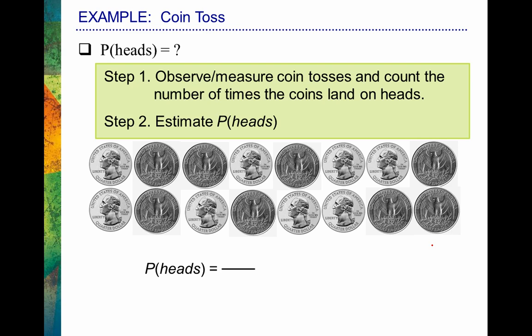Now we've got some data to look at — that's what the relative frequency perspective of probability relies on. To compute the probability of flipping a coin and having it turn out heads, we look at the number of times that event happened. We count eight heads over 16 total tosses, which of course equals 0.5. I made up this example so it would work out nicely, but I also use it to raise the next type of probability we're going to talk about.